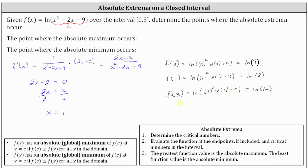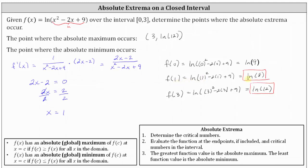From here, the greatest function value is the absolute maximum, which is natural log 12. The least function value is the absolute minimum, which is natural log eight. So the point where the absolute maximum occurs is the point (3, ln 12) — more specifically, the absolute maximum is natural log 12 at x equals three. The point where the absolute minimum occurs is (1, ln 8) — more specifically, the absolute minimum is natural log eight at x equals one.